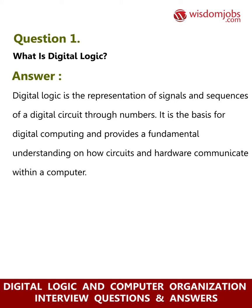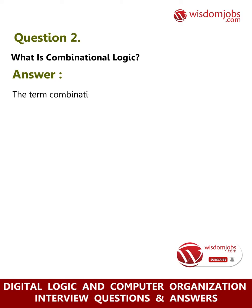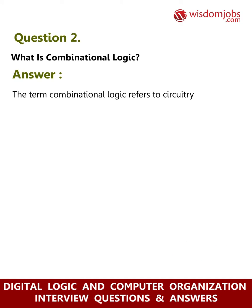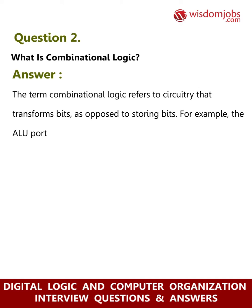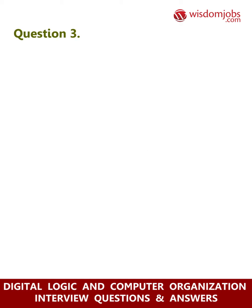Question 2: What is combinational logic? Answer: The term combinational logic refers to circuitry that transforms bits, as opposed to storing bits. For example, the ALU portion of a CPU transforms data, such as transforming two input word-sized bit strings into an output which is the sum of the two inputs.